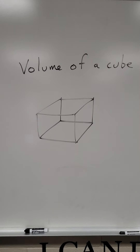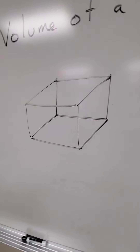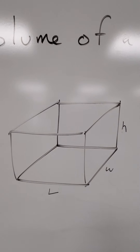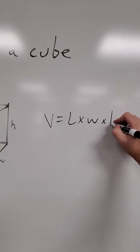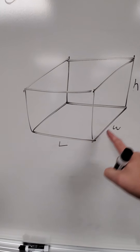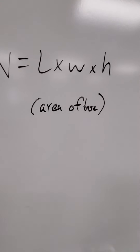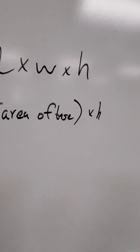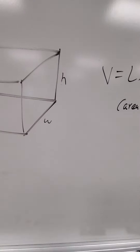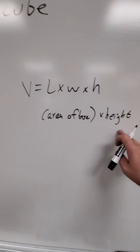7th grade, you guys learned how to find the volume of a cube. Volume of a cube is found by taking the length, width, and the height and multiplying them all together — length times width times height. If you look at it, length times width is actually an area — that's the area of the base. So if you go length times width, you're finding the area of the bottom, and then you times it by the height to find the volume. Therefore, volume of a cube is exactly the same as the volume of any shape: find the area of its base and times it by the height.